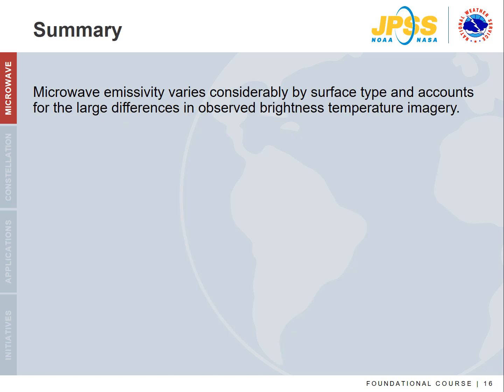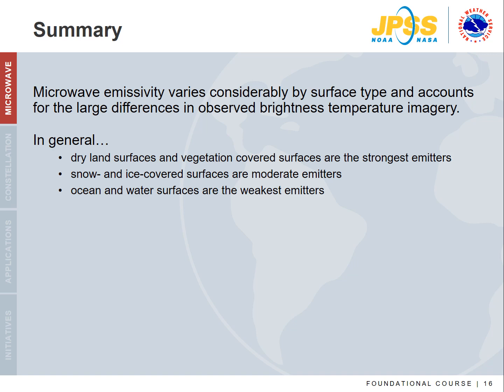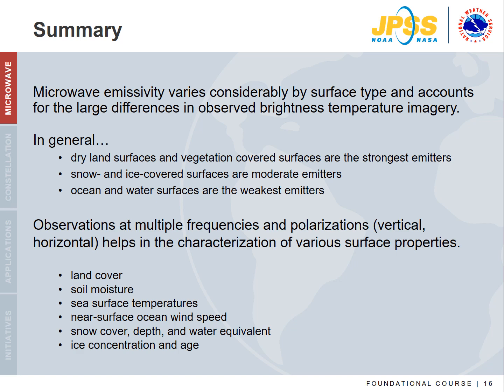To summarize, microwave emissivity varies considerably by surface type and accounts for the large differences in observed brightness temperature imagery. Dry land surfaces and vegetation are the strongest emitters, with brightness temperatures closer to their physical temperature, while ocean and water surfaces are the weakest emitters, resulting in very cold temperatures compared to their physical temperature. Snow and ice-covered surfaces are moderate emitters and fall in between. Polarization is an important property that varies with surface type. Observations at multiple frequencies and polarizations help characterize various surface properties used in operations and as input to models.